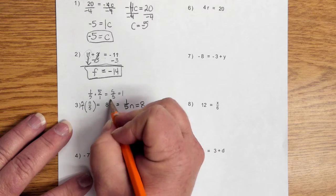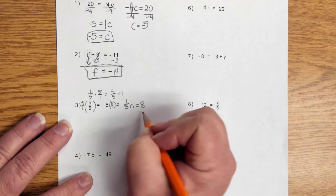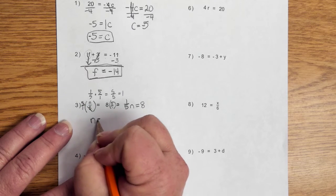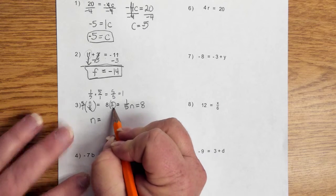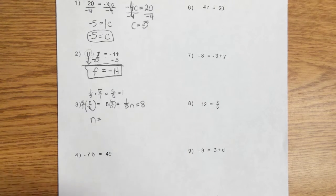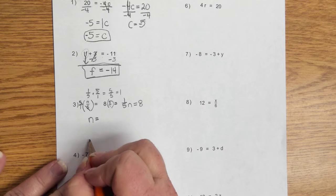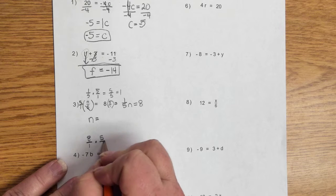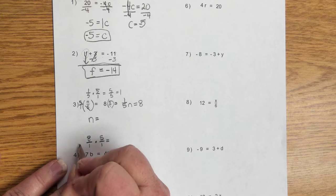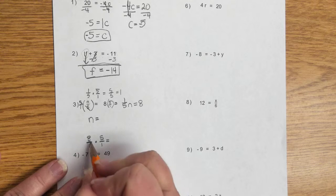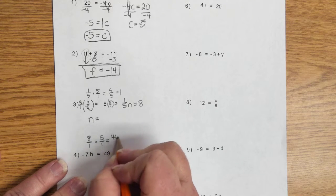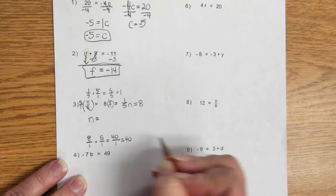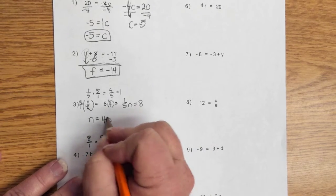And then what you do on one side, you have to do to the other side. Remember that this is going to cancel each other out. And you end up with n is equal to. Well, when you're doing multiplication of a whole number times a fraction, I'm going to come down here and I'm going to write it for you. It would be 8 over 1 times 5 over 1. And you would multiply straight across for fractions. 8 times 5 is 40. And 1 times 1 is 1. So, your answer would be 40.